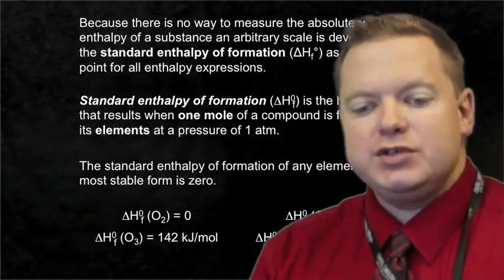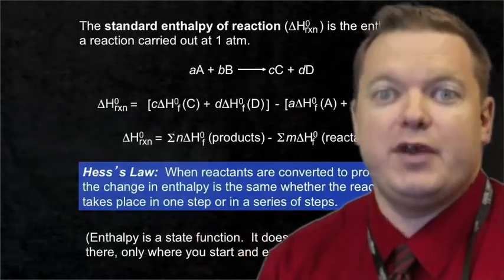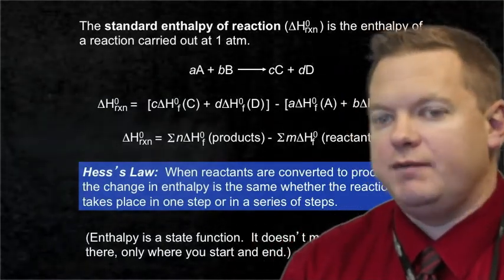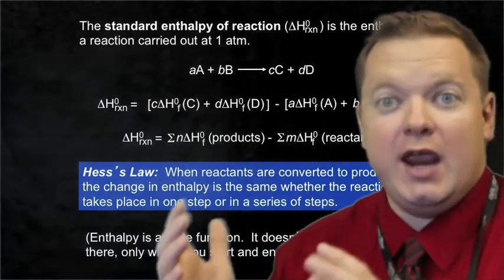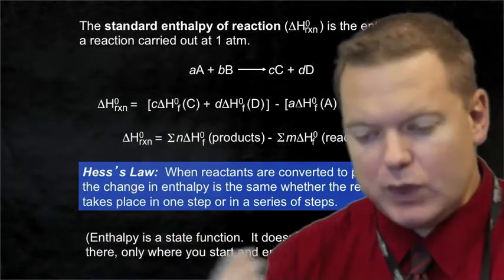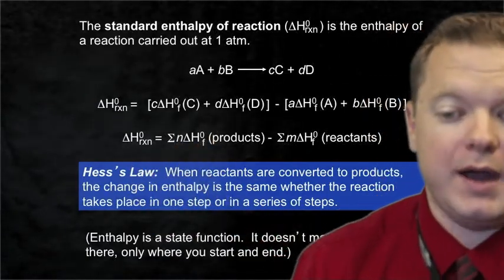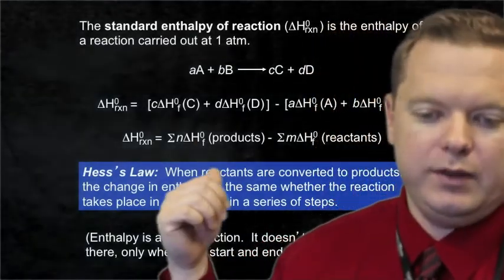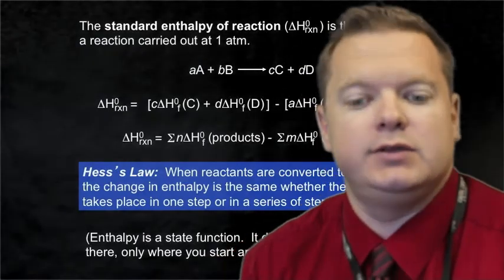Just as we use enthalpy of formation for a single compound, we can expand this to calculate the standard enthalpy of a reaction — again at standard conditions of one atmosphere and 25 degrees Celsius. For a general reaction aA + bB → cC + dD, the change in enthalpy equals the enthalpy of the products minus the enthalpy of the reactants, which is the final state minus the initial state. This equals the sum of the enthalpies of the products minus the sum of the enthalpies of the reactants, where n and m are the stoichiometric coefficients.